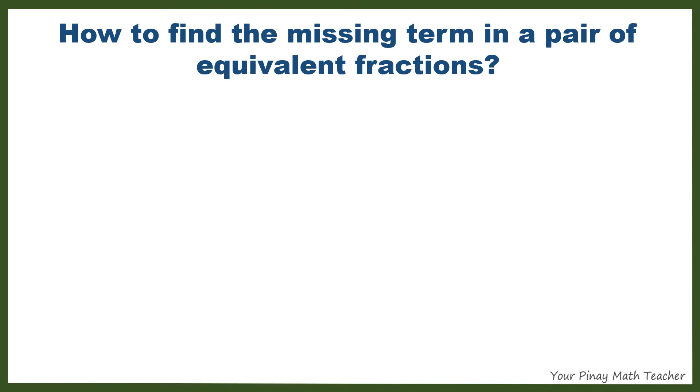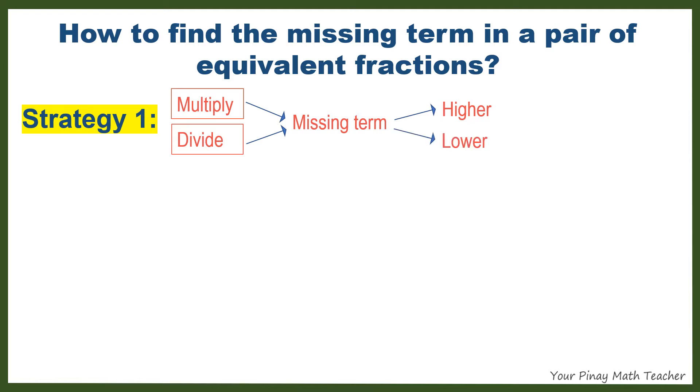How to find the missing term in a pair of equivalent fractions? Strategy 1. Multiply both numerator and denominator by the same number if the missing term is in its higher term. Divide if the missing term is in its lower term.